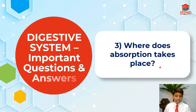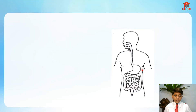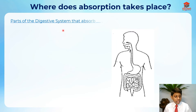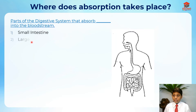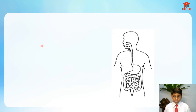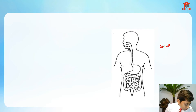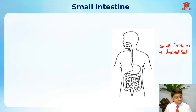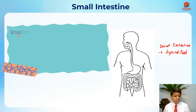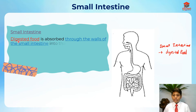Where does absorption take place? The parts of the digestive system that absorb into the bloodstream are the small intestine and the large intestine. The small intestine absorbs the digested food — the digested food is absorbed through the walls of the small intestine into the bloodstream.